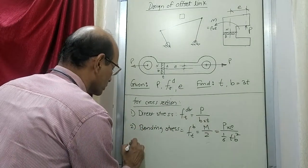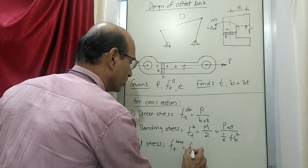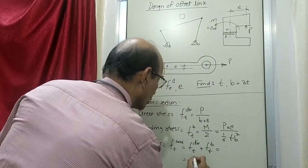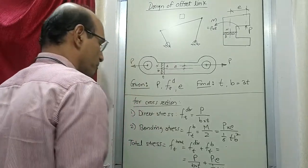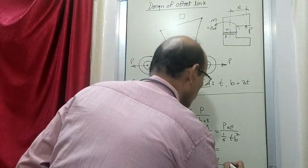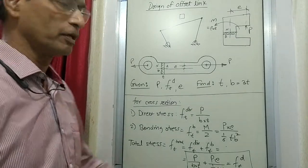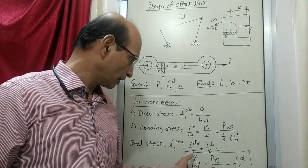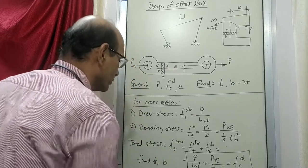From these two we can now say the total stress acting on this section is of tensile type. We are going to equate this with the design stress which is given. From this particular design equation that is formed, we can find out T and B. Because B is in terms of T, there is only one unknown which is T, and the rest is known. So we can find out T and B, where B is equal to 3T.